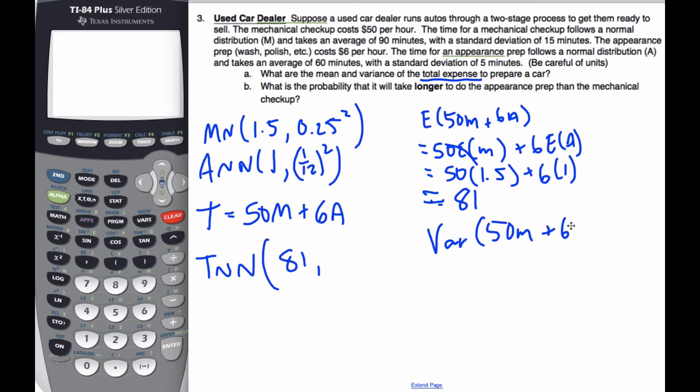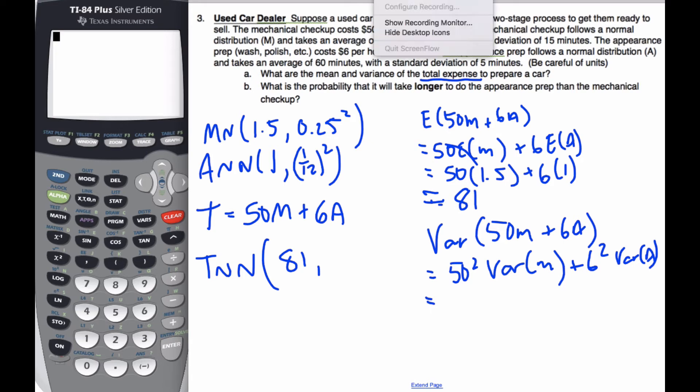When I do the variance, I end up with 50 squared times the variance of M plus 6 squared times the variance of A. And when I crunch that, I get a value of 156.5.